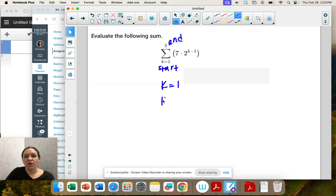So when k is 1, 2, 3, 4, 5, we're going to add those together and that's going to be our sum. That's evaluating - getting one number at the end.